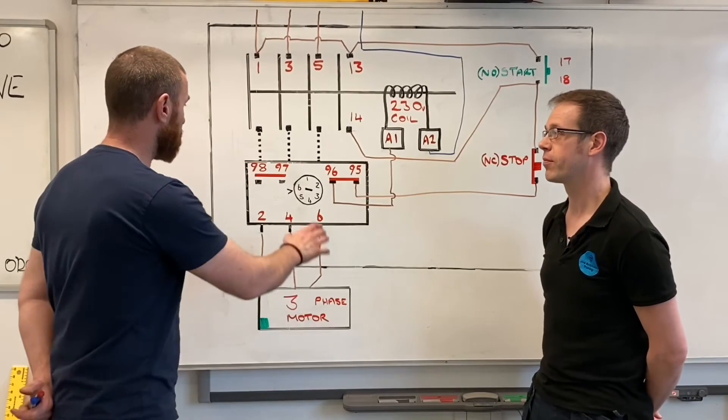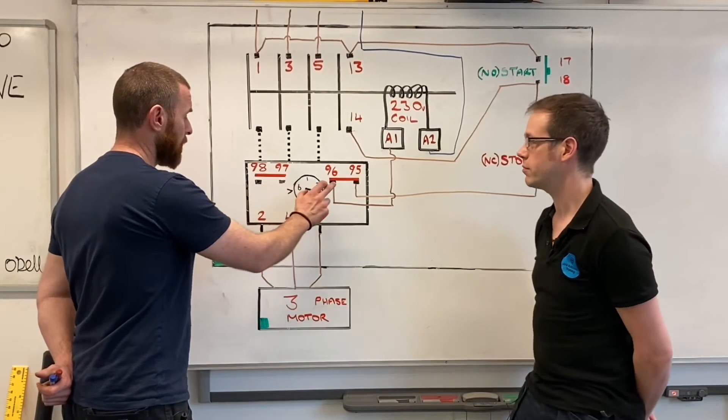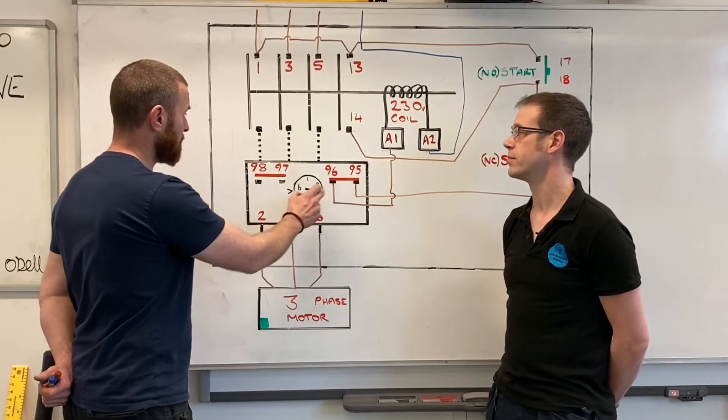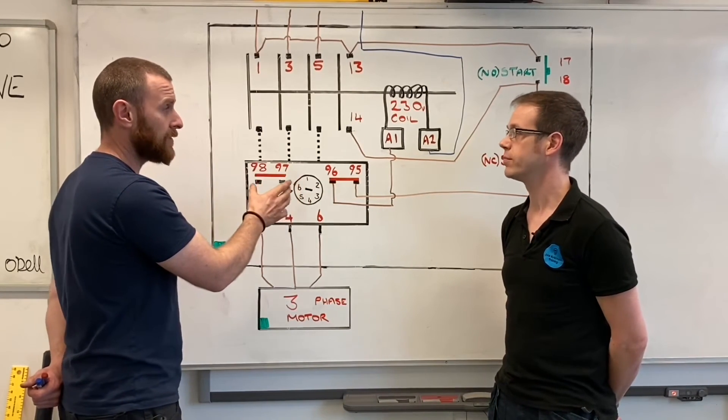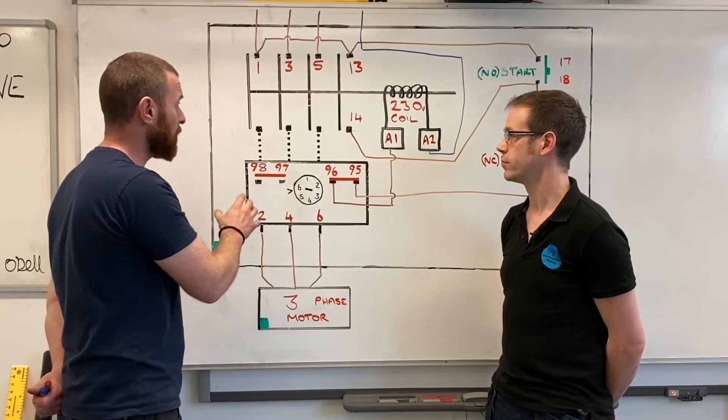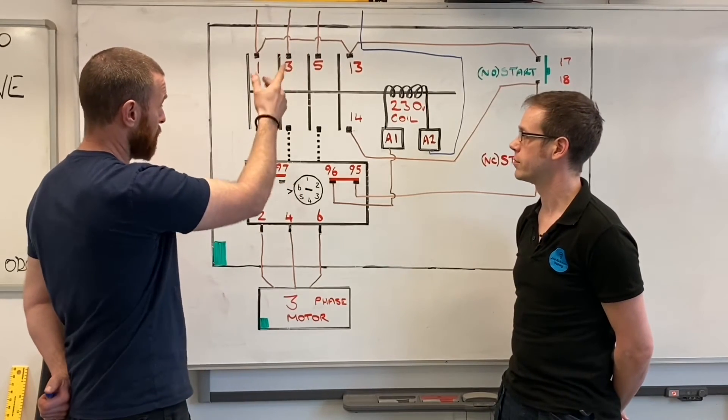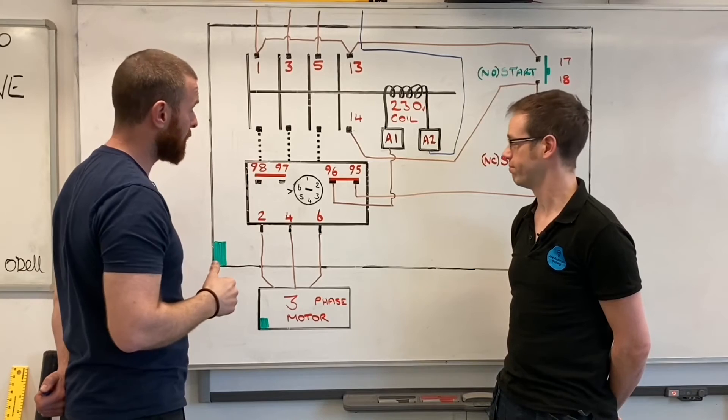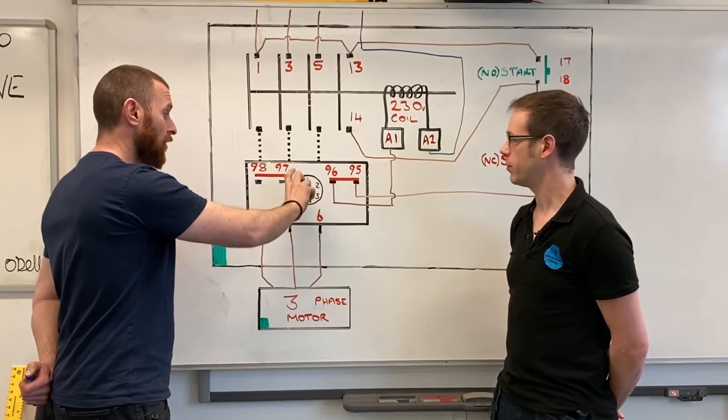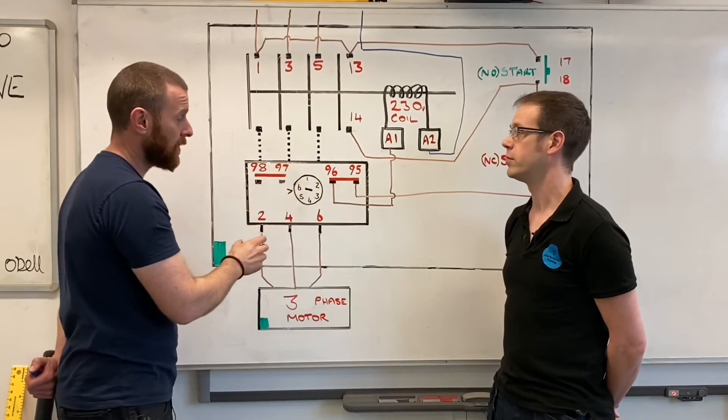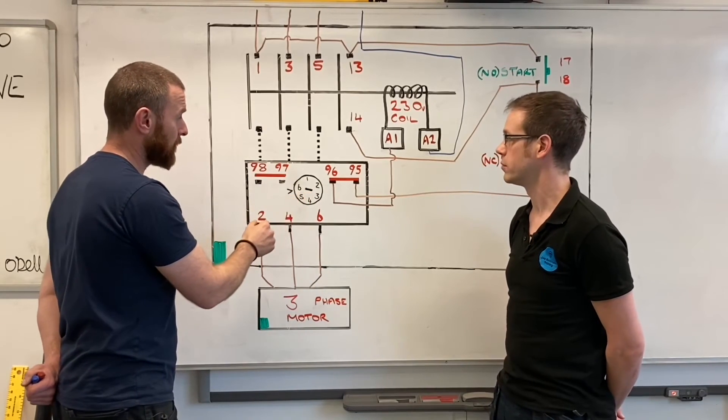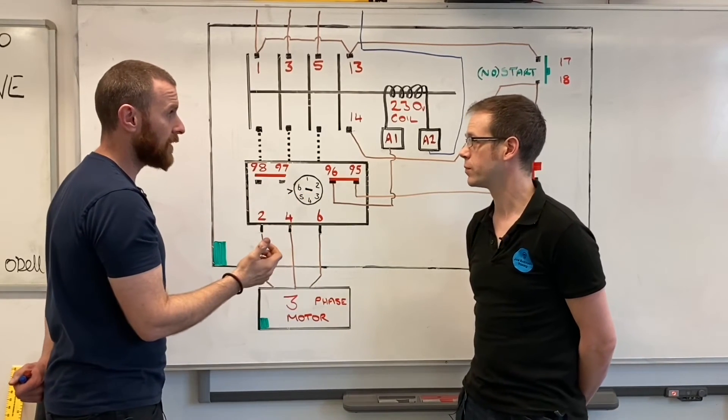We spoke about 95, 96, 97, 98. It's exactly the same, you can still have an indicator lamp. We won't draw it on this one, but you can do it because we've got a neutral up there, so we can still have an indicator up there.